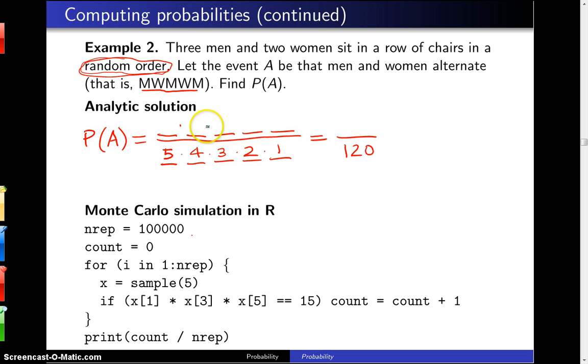So that's what we're after here, and we're going to use the multiplication rule again. First of all, we have to have a man in this leftmost chair, so there's three choices in that case. We have to have one of the two women in the next chair, so there's two choices there. Then this has to be a man also, so there are two men left to choose from.